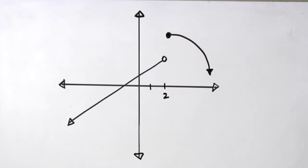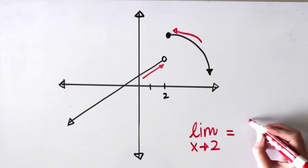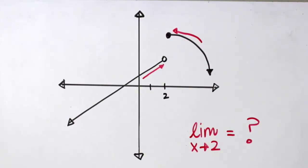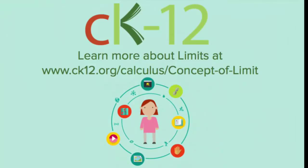What do you think would happen if the graph approached a different value from the left side than it did from the right side? To find out and to learn more about limits, go check out the reading links here in the description below.